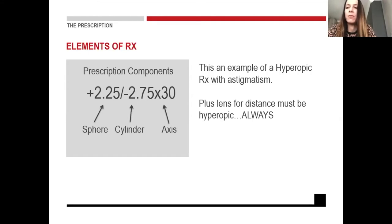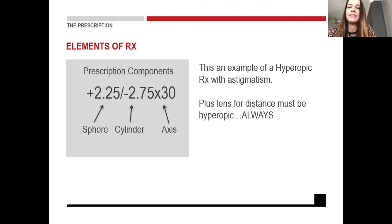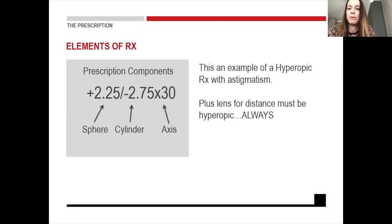Here is an example of a hyperopic prescription with astigmatism. The plus in front of 2.25 means it's a hyperope, and the minus 2.75 axis 30 is the astigmatism part. Remember, plus lenses for a hyperopic patient must always be plus — always, always, always.